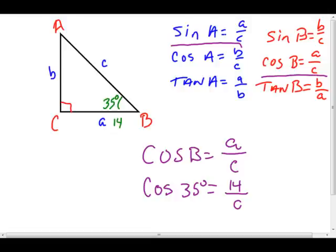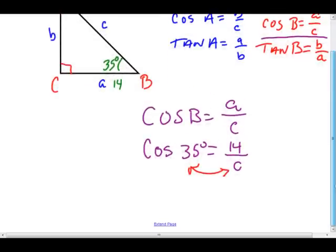But what we're actually looking for is side C. So how do we solve for side C? Here's the shortcut: when you're faced with a situation where you have the variable in the denominator, you take the cosine or sine or whatever your ratio is and the variable and switch places.